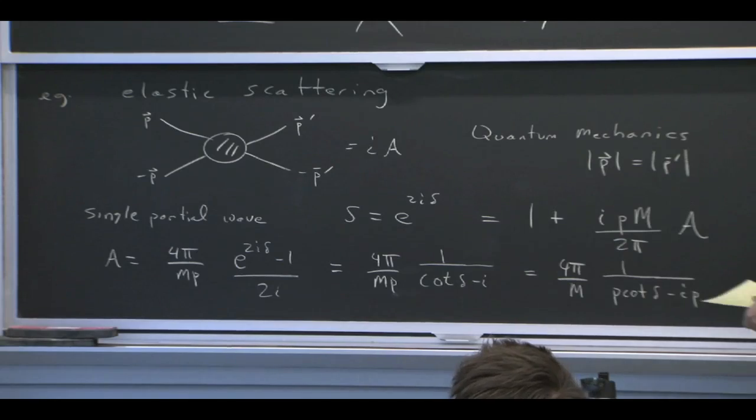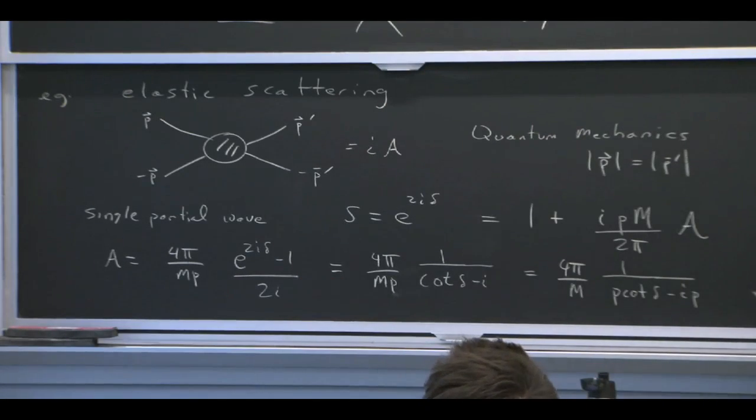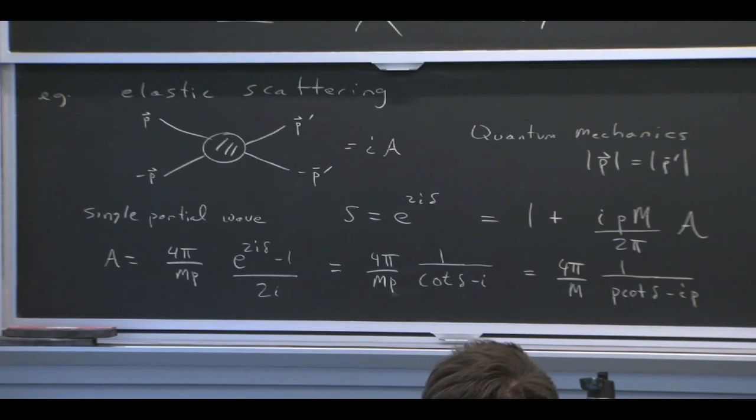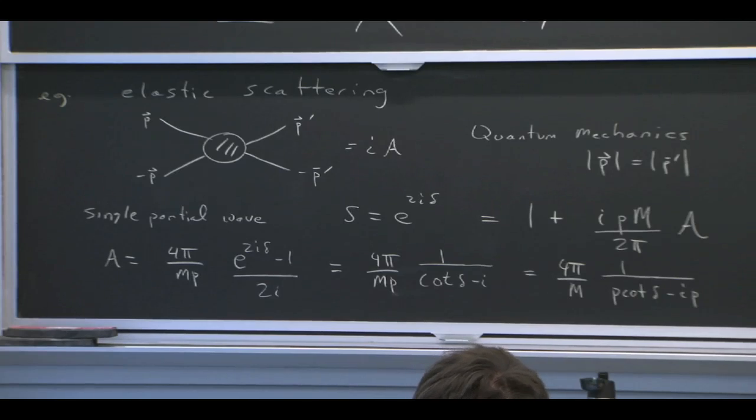So that's the amplitude, which is that the amplitude should be given by 1 over something that's p cotangent delta, scattering angle, or the S matrix angle, and then minus this IP. OK? So the I just shows up here in this part. And that's the complex part of the amplitude. It's basically going to be related to unitarity. But that IP is there. This S matrix is obviously unitary. S dagger S is 1. All right.